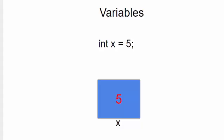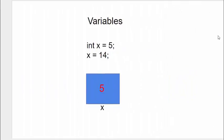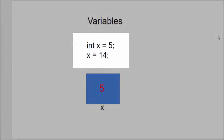Now let's look at some operations we can do with these variables and their boxes. Consider these two lines of code, int x equals 5 followed by x equals 14.